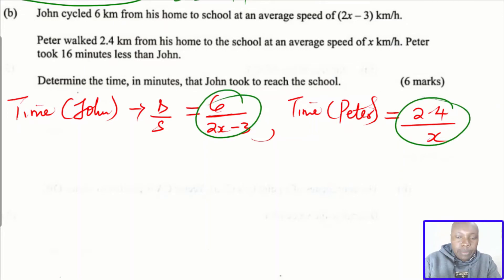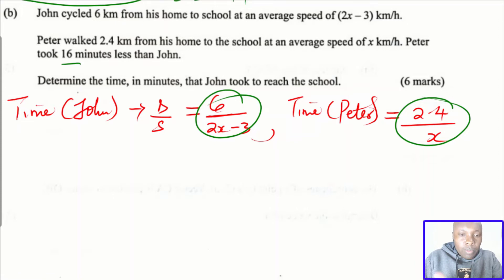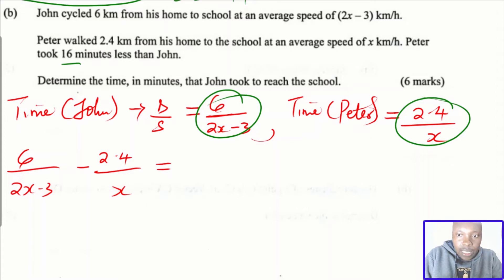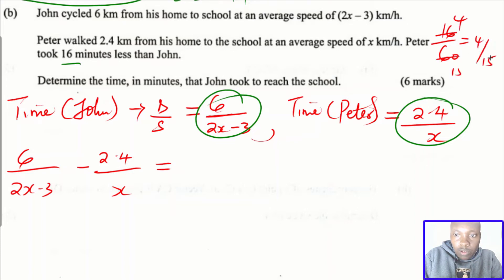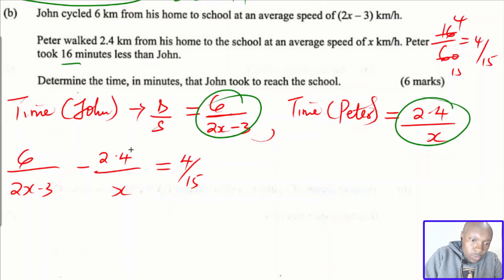These are the expressions for the time taken by John and Peter. Using the condition that Peter took 16 minutes less than John, we write: 6/(2x − 3) − 2.4/x = 16 minutes. Converting 16 minutes to hours: 16/60 simplifies to 4/15 of an hour. So the equation to solve is 6/(2x − 3) − 2.4/x = 4/15.